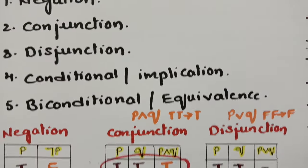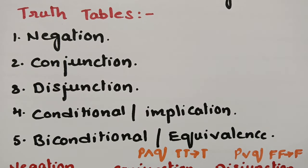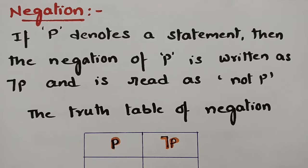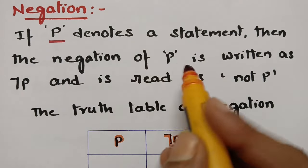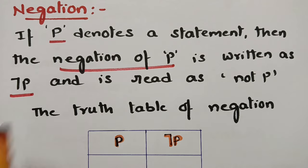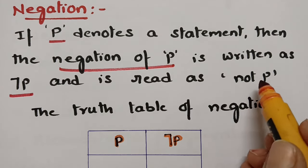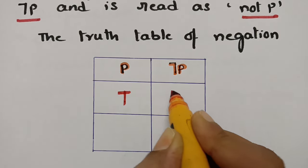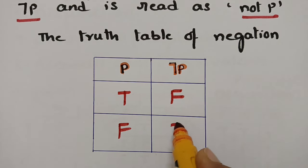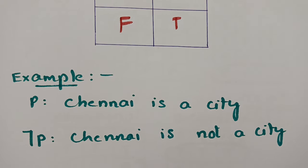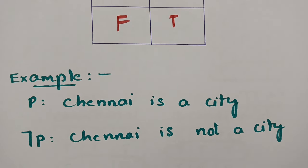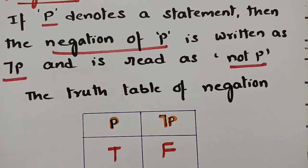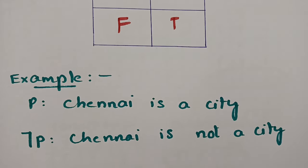For a clearer explanation — negation: if P denotes any statement, then the negation of P is written as ¬P, read as 'not P.' The truth table for negation: if it is true, the negation is false; if it is false, the negation is true. For example, if P is the statement 'Chennai is a city,' then the negation of P — the opposite statement — is 'Chennai is not a city.'